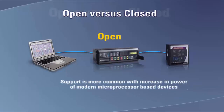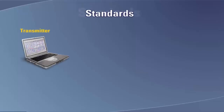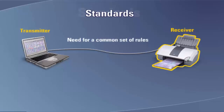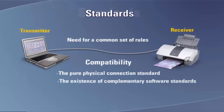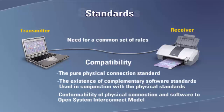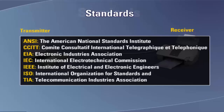The optimal configuration has all devices directly connected to the LAN, eliminating the need for a data concentrator and its associated delays. One of the most important features of a communication system is the need for a common set of rules so both receiver and transmitter understand each other — referred to as compatibility. There are three issues associated with compatibility: the physical connection standard, the existence of complementary software standards at transmitter and receiver, and the conformability of the physical connection and software to the OSI model.